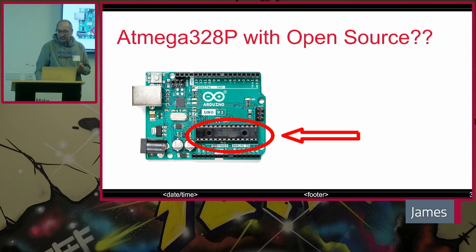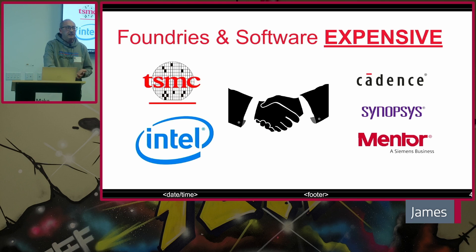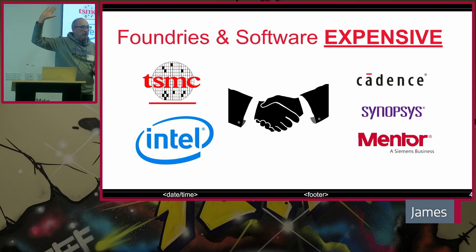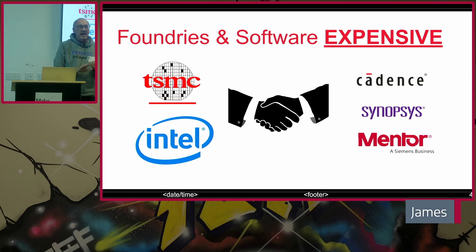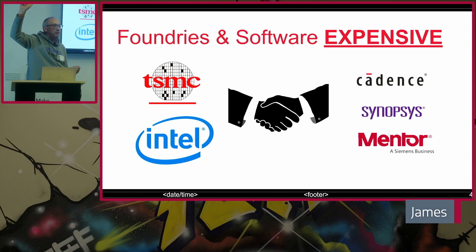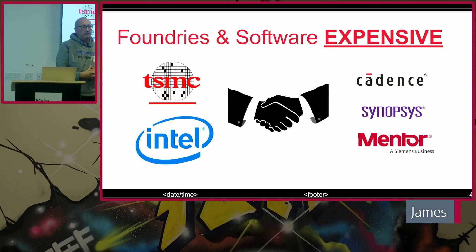What actually goes on is a really big song and dance that happens in the background. There are foundry companies — Intel, TSMC, UMC — who manufacture these chips en masse. TSMC, for those who don't know, manufactures NVIDIA chips, Apple chips, Qualcomm chips, so they're basically a major hub for chip design. Cadence, Synopsys, and Mentor — these EDA companies — you can spend maybe $2 million a year in premiums just for the software. So how do you actually go and do open source chip design?